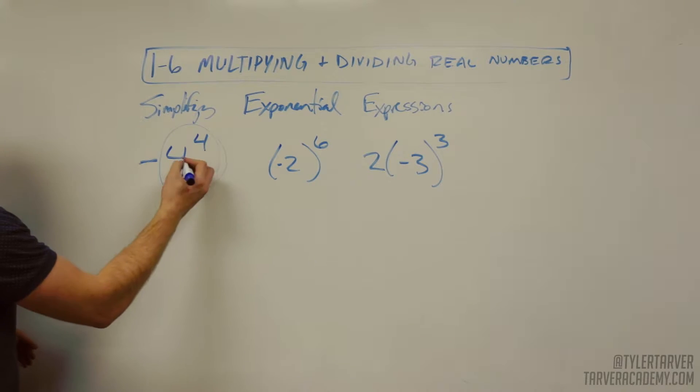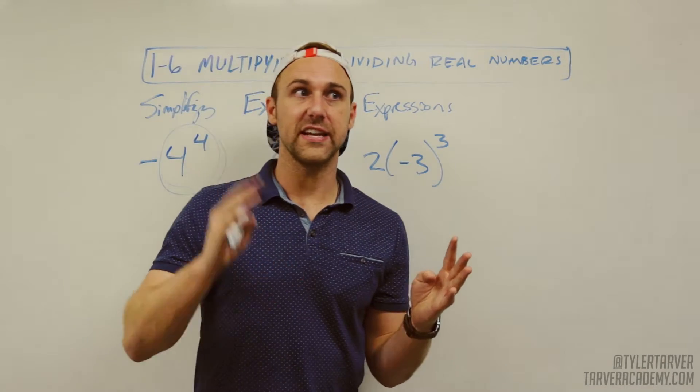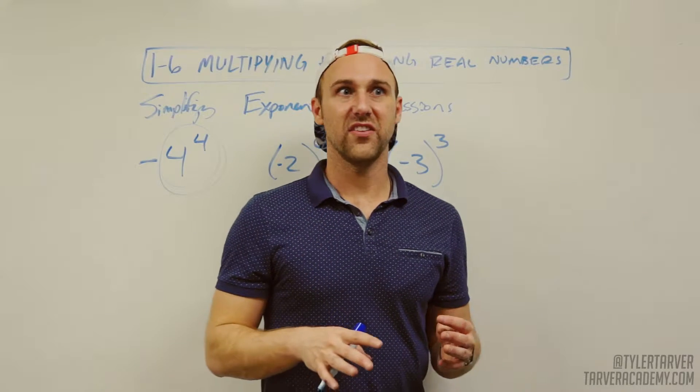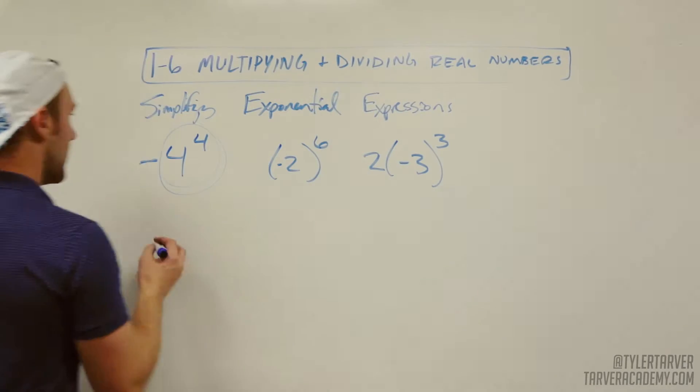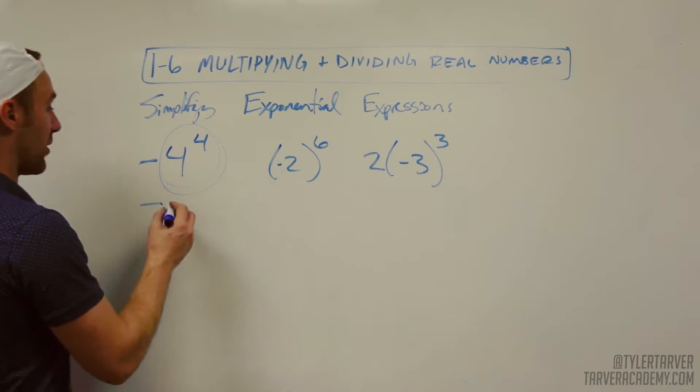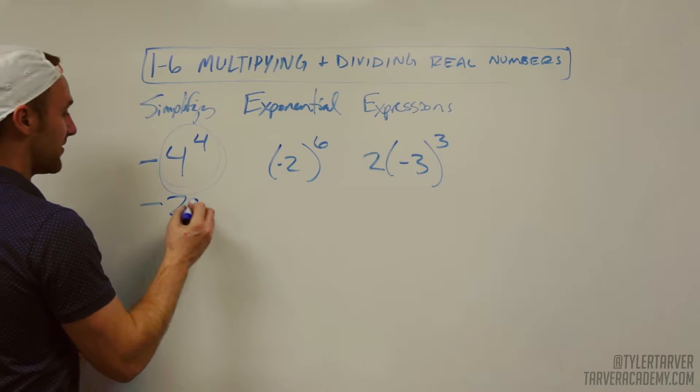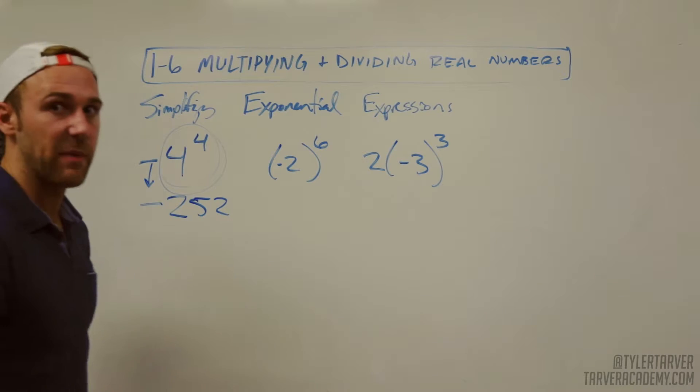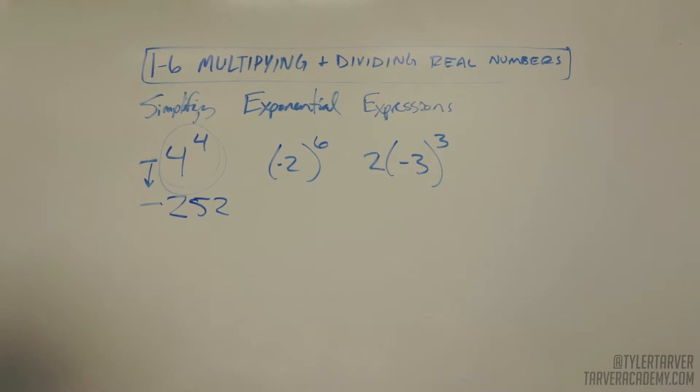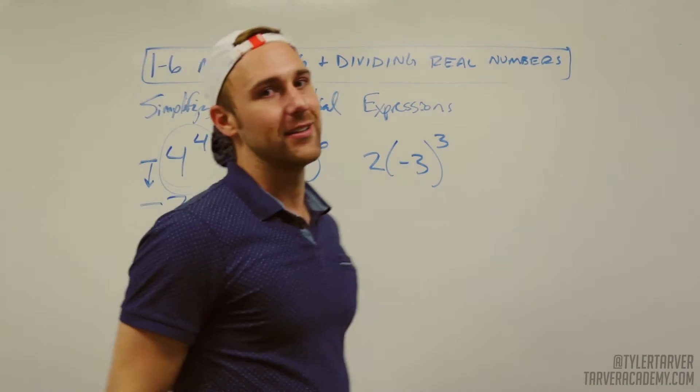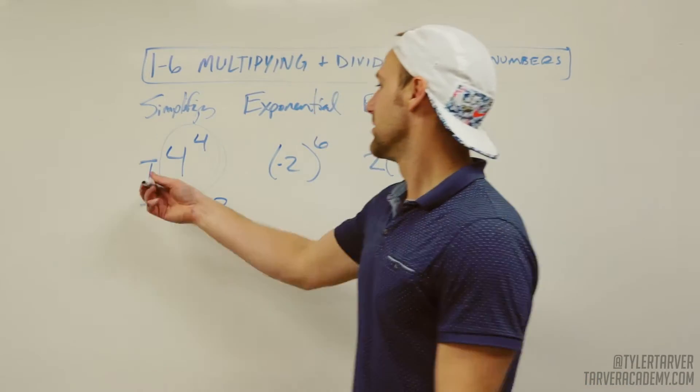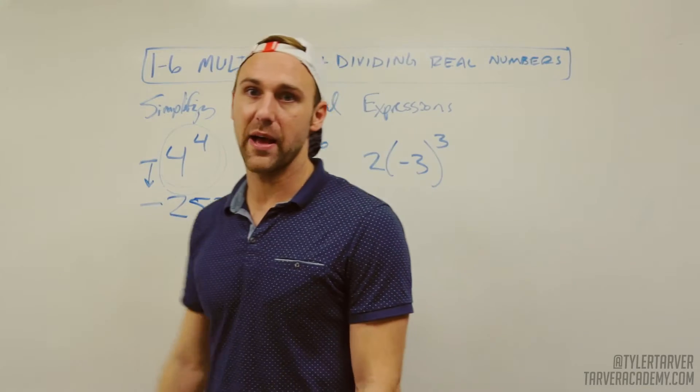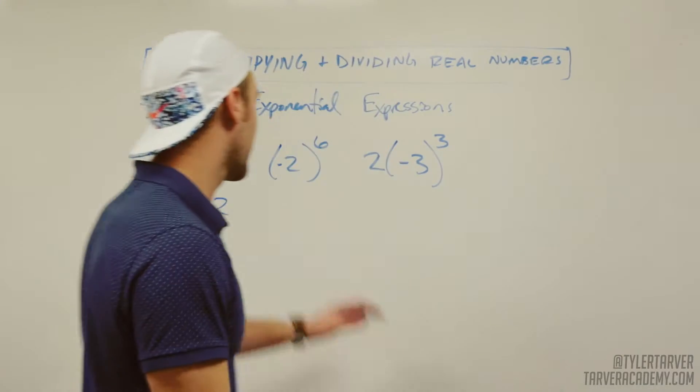So let's see. Four to the fourth. That's four times four, which is 16 times four, which is 64 times four, which is 252, I think. Hope I got that right. I promise I didn't do that beforehand. It's been a while since I've done that math. 252 and that negative just comes down. It's like the negative just steps back and goes, do your math. And then you just do the number and stick the negative back in the front.